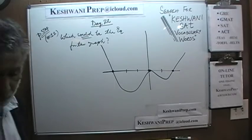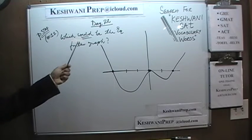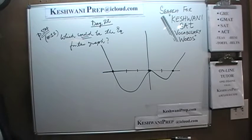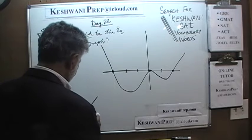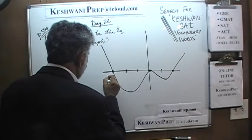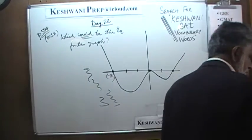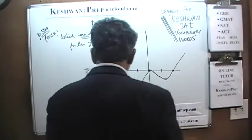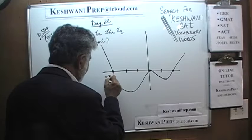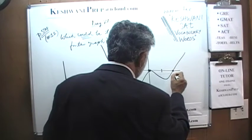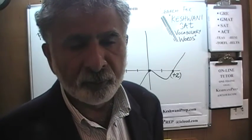Let's take a look at the very first problem on page 594, number 11. It says: which of the following — there are four equations — which of the following could be the equation for the graph that is given? The graph crosses the x-axis at negative 3, crosses again at negative 2, crosses at positive 2, and then touches the origin. It bounces off the origin. The question simply is: what is the equation for this particular graph?